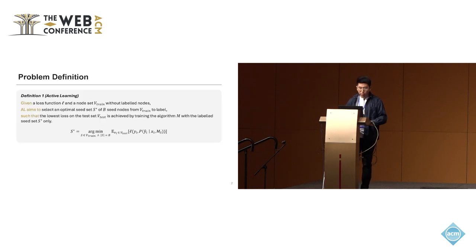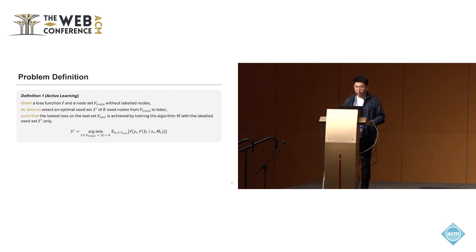More formally, for active learning, given the loss functions and a training node set without labeled nodes, active learning aims to select an optimal seed set with B budgets from the training node set to label, such that the lowest loss on the testing set is achieved by training algorithm M with the labeled seed set.